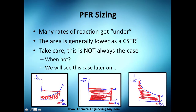Independent of the type of rate of reaction, we will have to calculate these areas. In general, the areas are lower than for continuous stirred tank reactors — though that's not always the case, and we're going to see later when it's not.